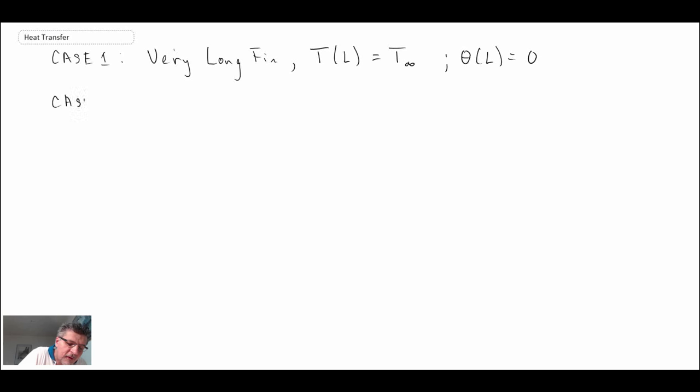Case two is a more realistic one because you'd never have a fin that long that it gets to the ambient temperature. Well, you could, but usually it wouldn't. Case two is finite length, and we're going to lose heat from the tip via convection. This is the most realistic scenario because that is what actually happens.